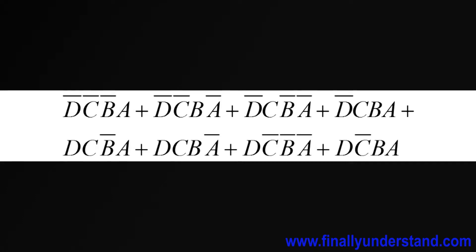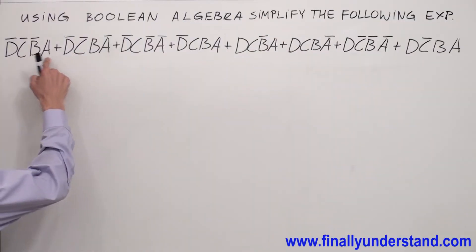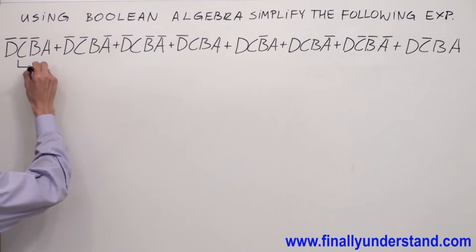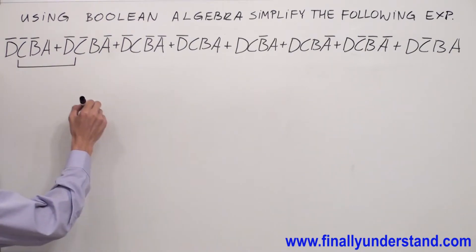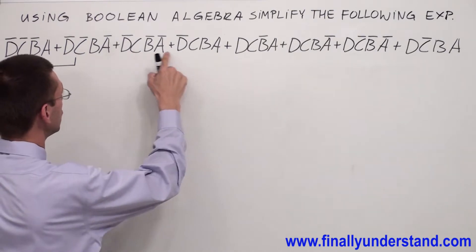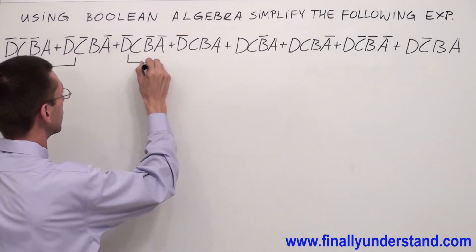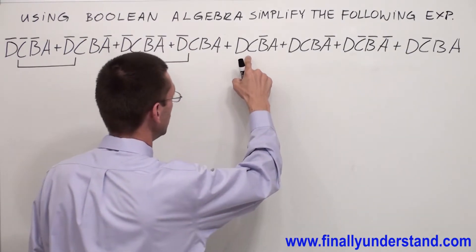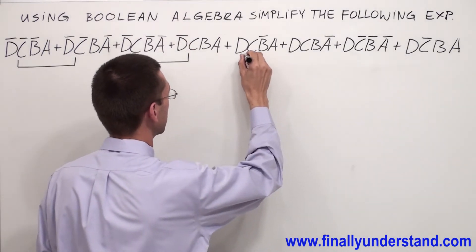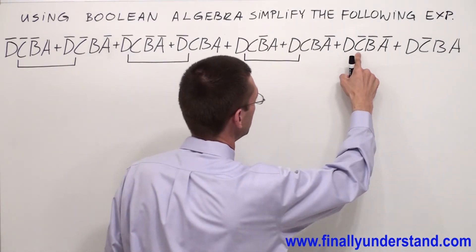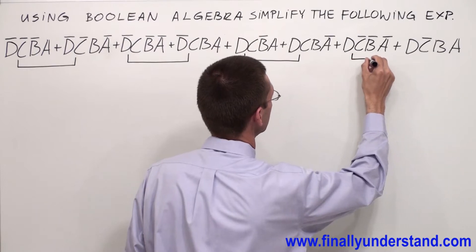Let's take a look at how we can simplify the following example. From these two terms, I can factorize D0C0. From these two terms, I can factorize D0C. From these two terms, I can factorize DC. From these two terms, I can factorize DC0.